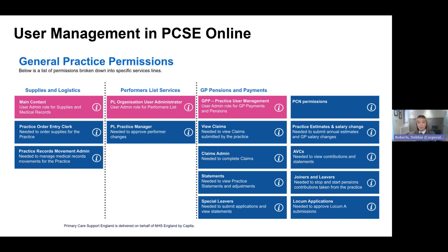As a user administrator, the only responsibility is to sign people up for an account and provide other users with the roles they need. If Brenda wants to order supplies she'll need to speak to the main contact, who is the user administrator for Supplies and Logistics. If she's promoted and needs to handle pension work, she'll need to find the GPP user administrator for Payments and Pensions, who can then assign her the roles she needs.